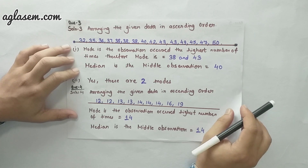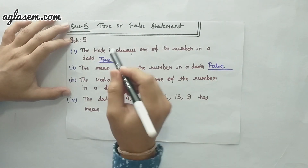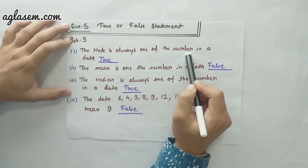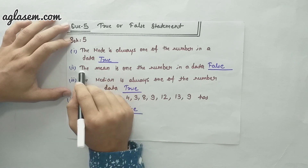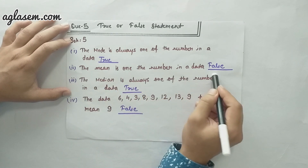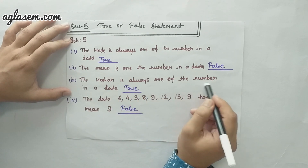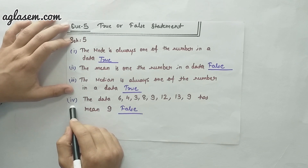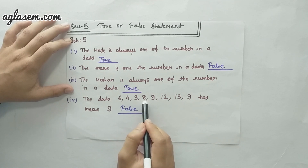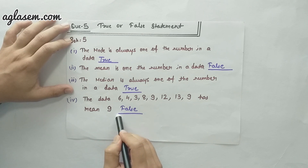Moving forward to the fifth question: true or false statements. We have to see whether the statements are true or false. The first statement: the mode is always one of the numbers in a data. True. Second part: the mean is always one of the numbers in the data. False. Third part: the median is always one of the numbers in the data. True. Fourth and last part: the data 6, 4, 3, 8, 9, 12, 13, 9 has a mean of nine. False.